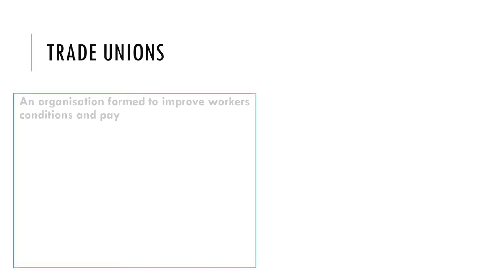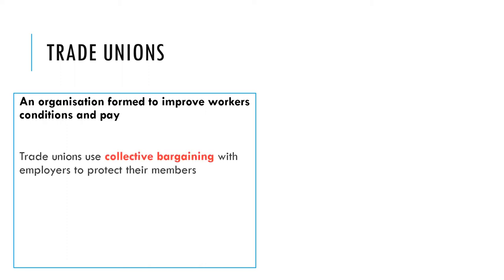Let's start off with what we mean by trade union. A trade union is an organisation formed to represent and improve workers' conditions and pay. They use a process called collective bargaining, where essentially what you agree with the union applies to all workers, and if you don't give that to the group then none of them will work.